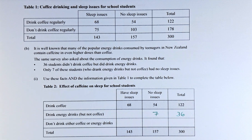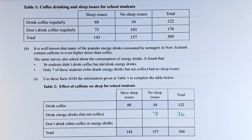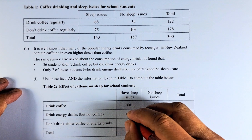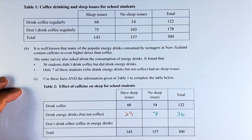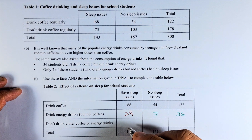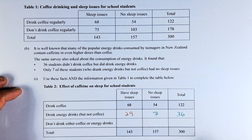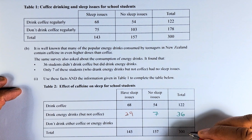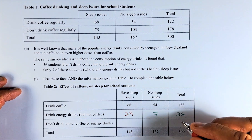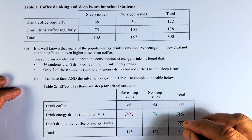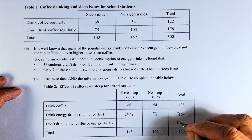So to fill up the table based on this data: this value is going to be 29, because 29 plus 7 is 36. Then we fill up the row at the bottom. The first calculation is 300 minus 122 minus 36, and the answer is going to be 142.